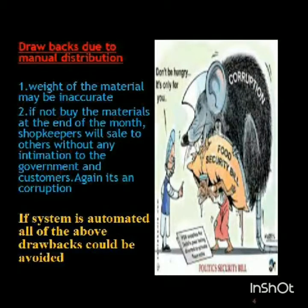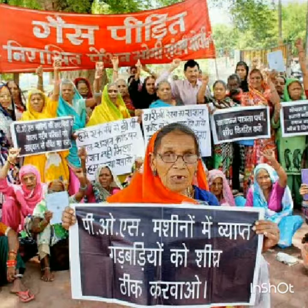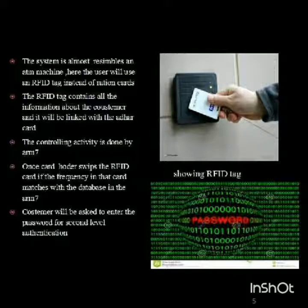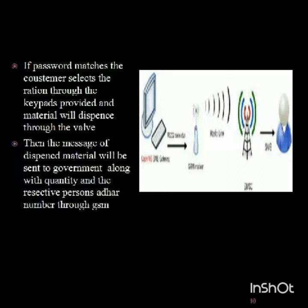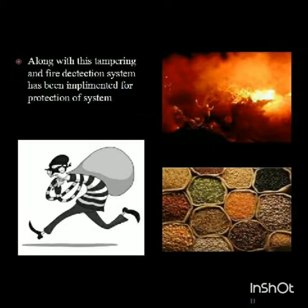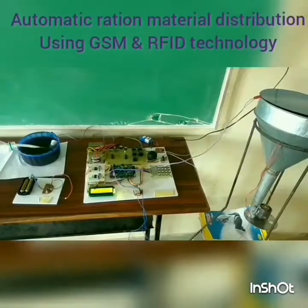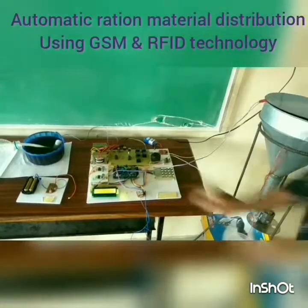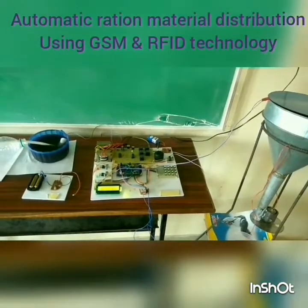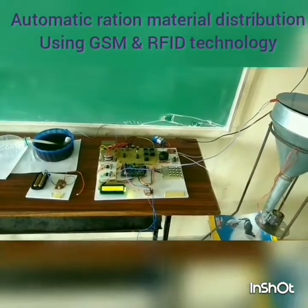If the system is automated, we can overcome these issues — that is the goal of our project. We use an RFID card instead of a ration card, and the core of the project is the ARM7 processor. We have also implemented a tampering and fire detection system. You can see the basic model, the container, and the circuit construction of the project.